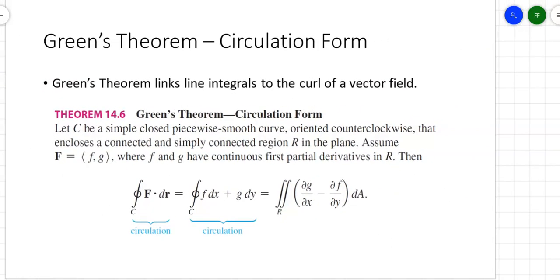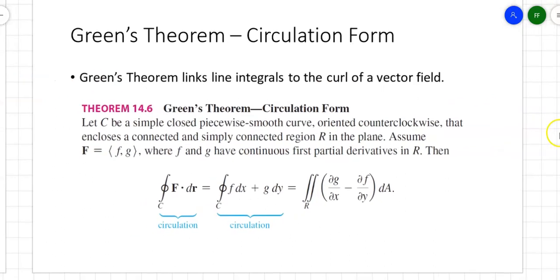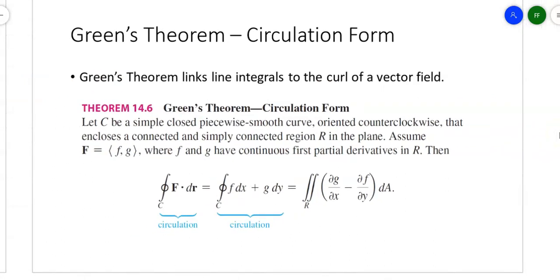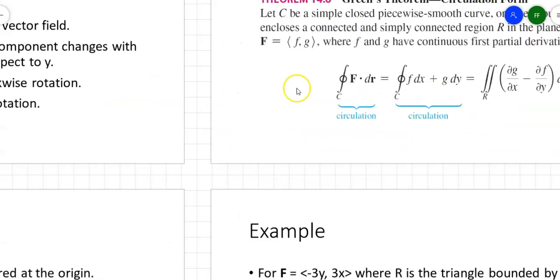There's two different forms of Green's Theorem. Green's Theorem links line integrals to the curl of a vector field. There's a circulation form and a flux form. You could calculate circulation as F dot DR, but there's another way to calculate circulation, which is the integral of F with respect to X plus the integral of G with respect to Y. Green's Theorem then says you can also write that as the partial G with respect to X minus the partial F with respect to Y.